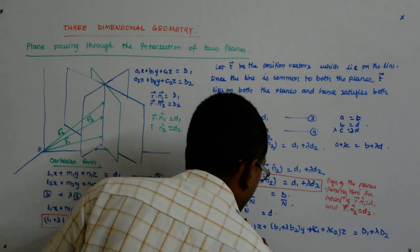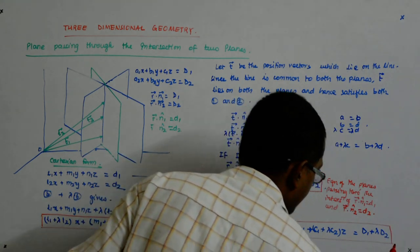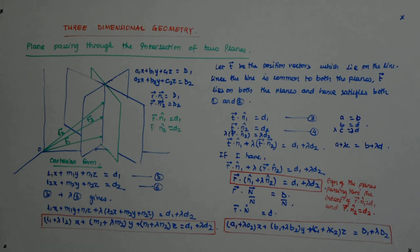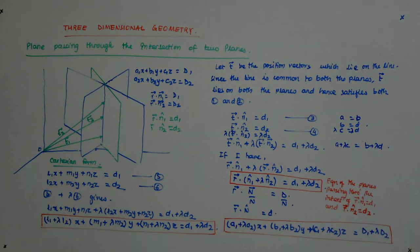So I have this or that. This is the Cartesian form. Now, let us do a question based on this. Question based on this.